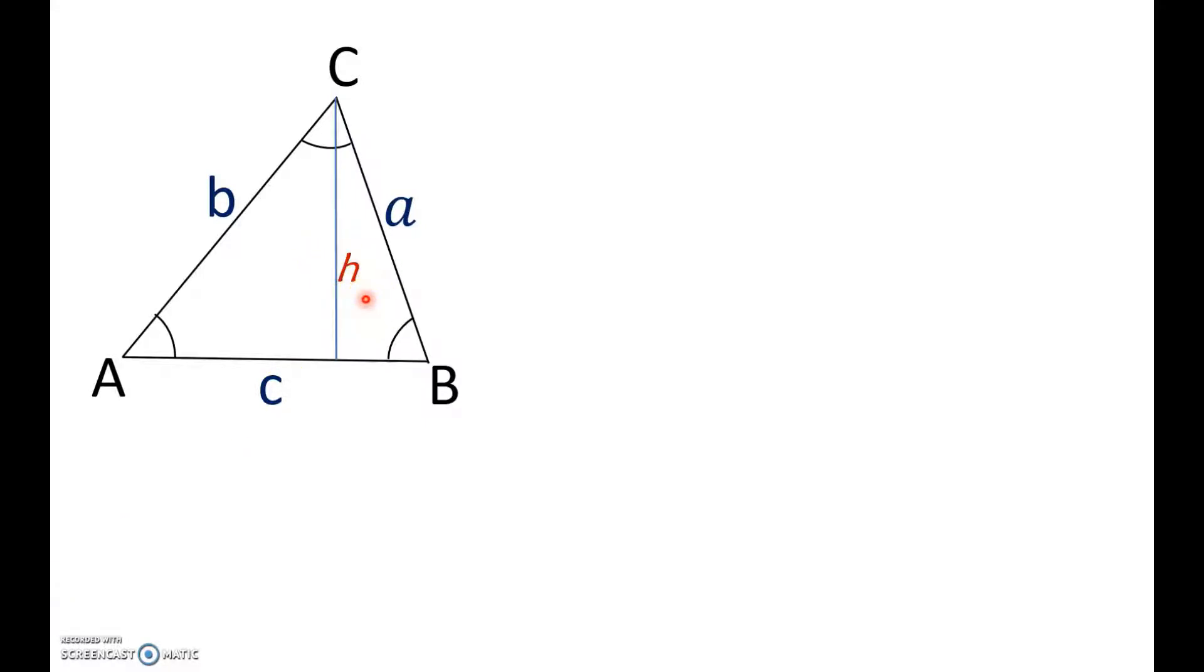Now, you can see there are two triangles inside this triangle, which are right-angled. Let me just bring them out here. You can see there are two triangles here and both are right-angled. So, let's apply the ratios, which is the sine ratio, to both of them.